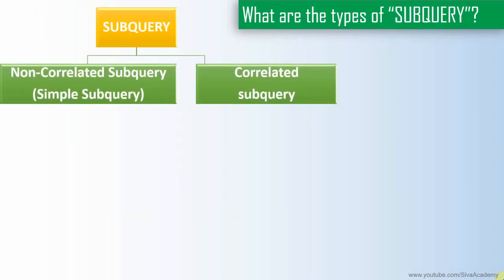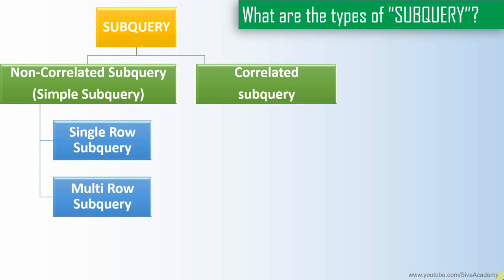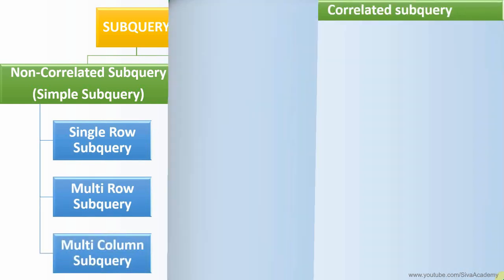Subqueries can be broadly categorized into two types: one is a non-correlated subquery and another is a correlated subquery. Non-correlated subqueries can be further classified into three types: single row subquery, multi row subquery, and multi column subquery.